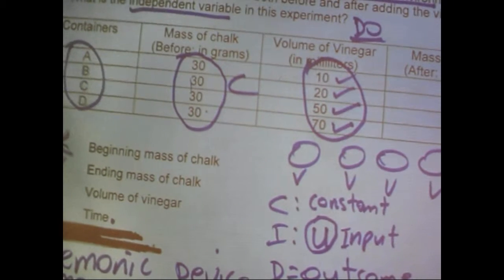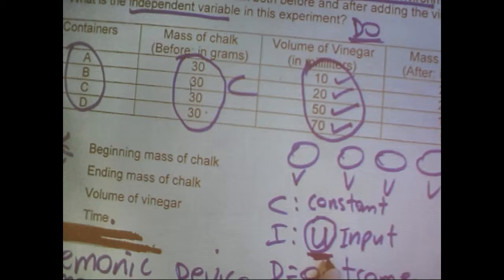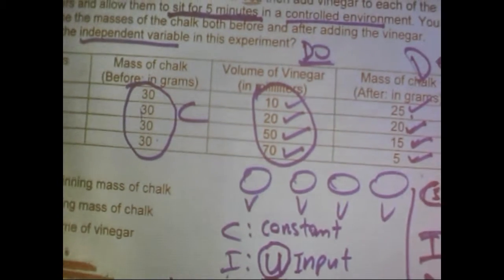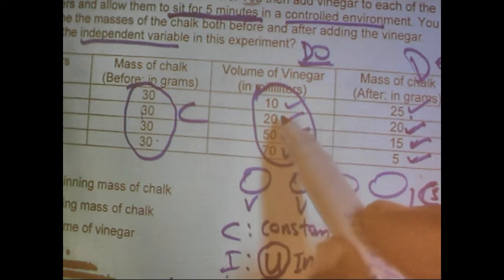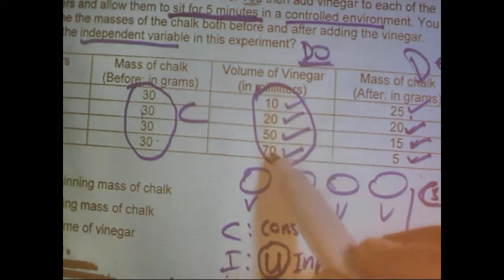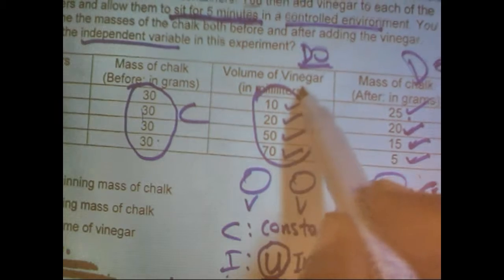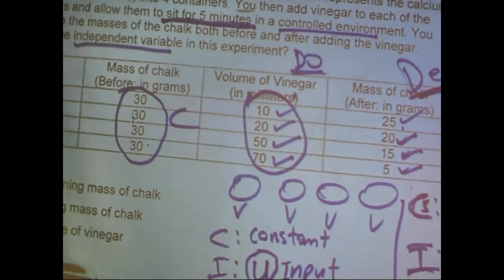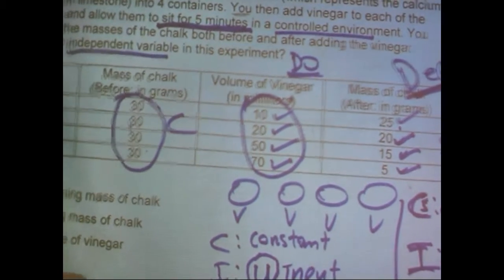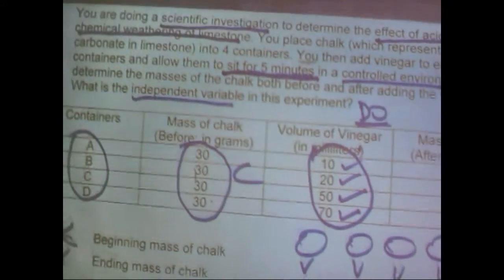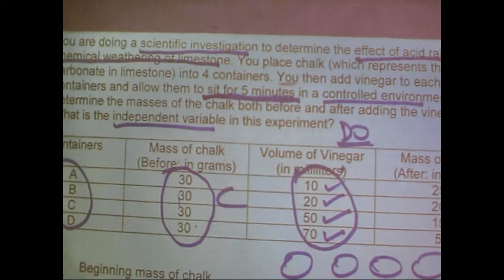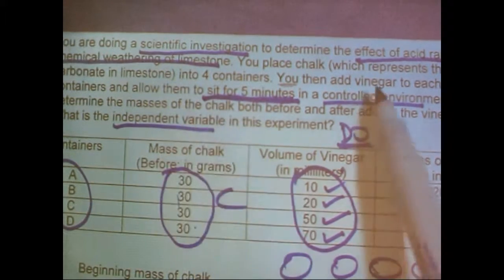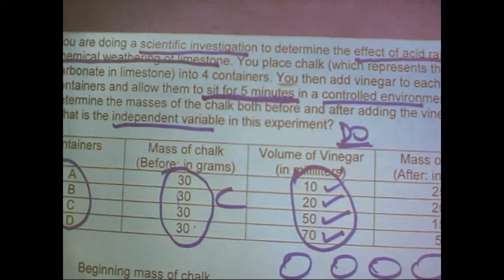My independent variable is the input — what you, the experimenter, do. What did we do in this experiment? We changed the volume of vinegar. And the outcome — the dependent variable — was that it reduced the mass of the chalk. That's exactly how you approach a question like this. You had a long paragraph, but you broke it down to only six key things to focus on.